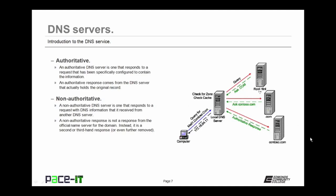Then there are non-authoritative DNS servers. A non-authoritative DNS server is one that responds to a request with DNS information it received from another DNS server. A non-authoritative response is not from the official name server for the domain — instead, it is a second or third-hand response given back to the requester. In most cases, when we send a DNS request, we get a non-authoritative response back.